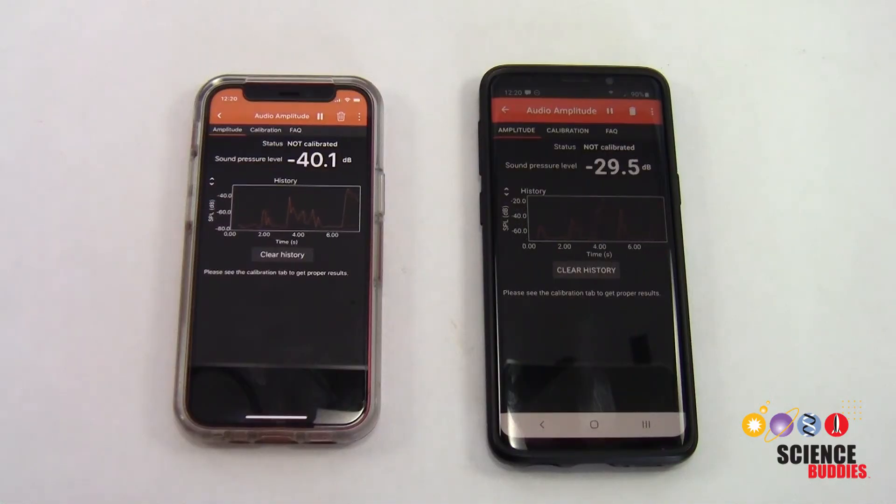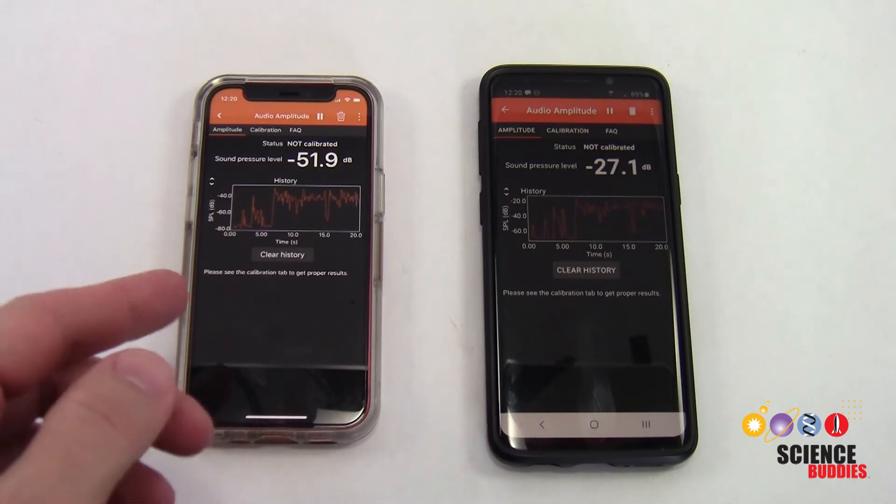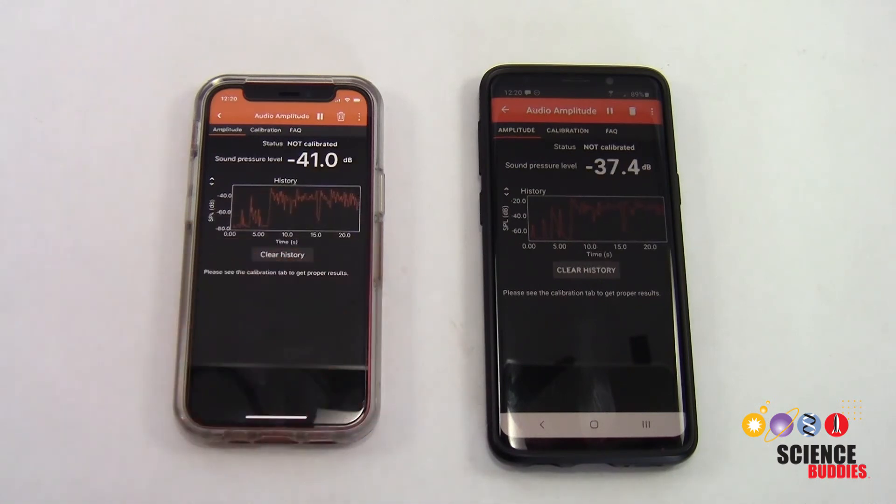Finally, note that you will need to calibrate different phones individually. As you can see here, with this iPhone 12 mini and this Samsung Galaxy S9, I do not get the same readings. You can't just go through the calibration process on one phone and then enter that calibration offset on another phone. Even if you have two phones that are the exact same brand, you could have some variation in manufacturing. So, if you need very accurate readings, it's a good idea to calibrate each phone individually.